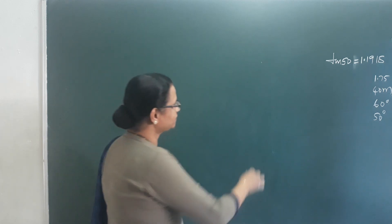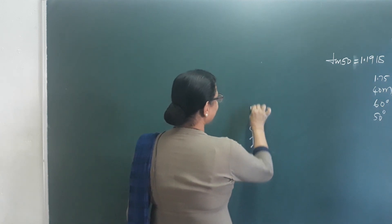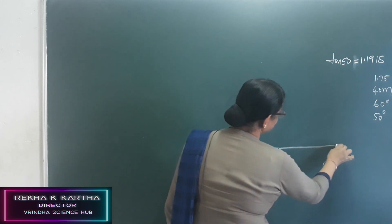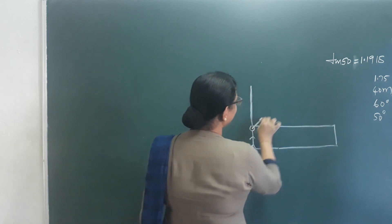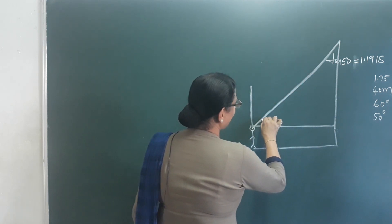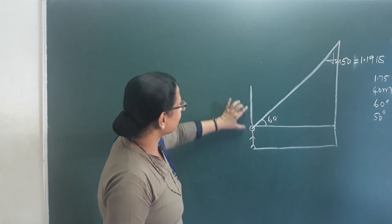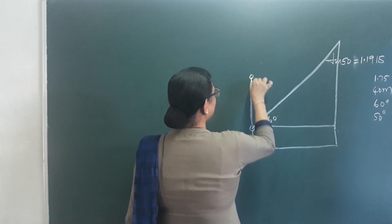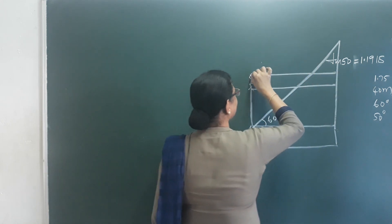The man is 1.75 meters tall standing at the foot of a tower. The tower has a certain height, and from the top of the tower he looks at the hill. We need to find the height of the tower and the height of the hill.